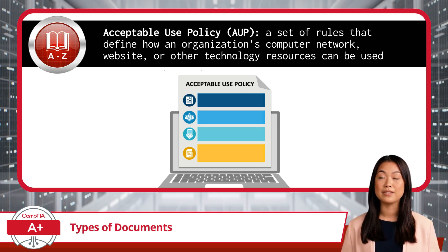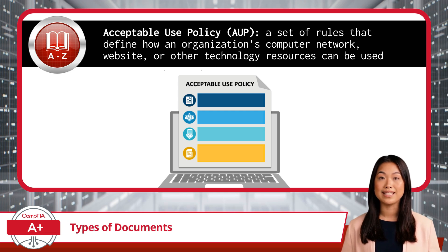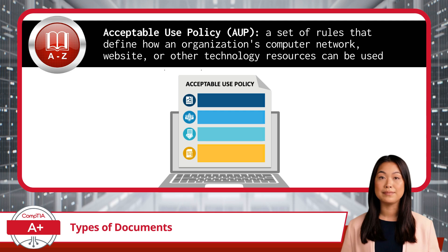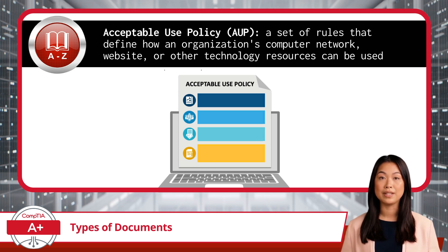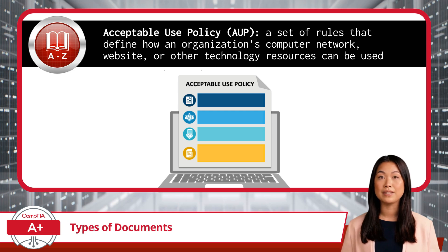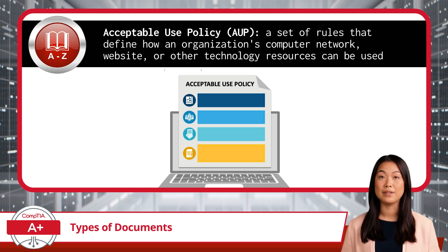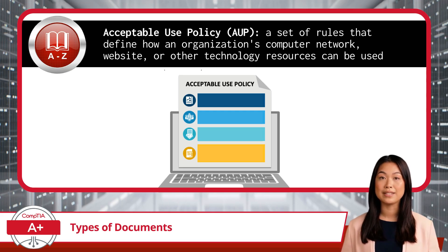Let's explore a few key types, starting with the Acceptable Use Policy, or AUP. An AUP is essentially a set of rules that define how an organization's computer network, website, or other technology resources can be used. It defines what's allowed and what's not, helping prevent security breaches and maintaining a productive work environment. For example, an AUP might specify that users shouldn't mine cryptocurrency on work computers or log into a device with another user's credentials. It could also outline which websites are accessible from work devices or even set rules for using generative AI solutions responsibly. Every employee is generally required to agree to the AUP before gaining access to company resources, setting clear expectations and boundaries.